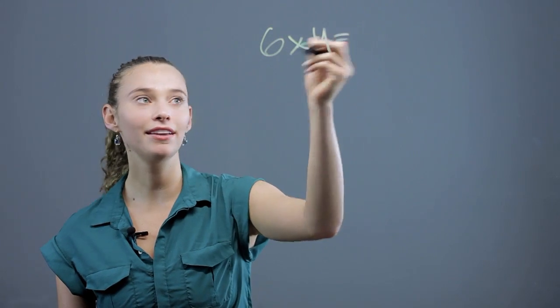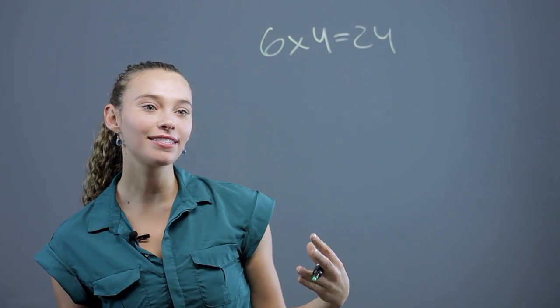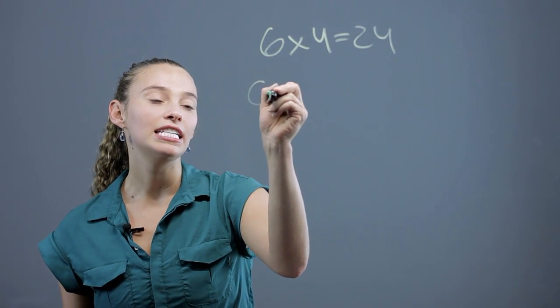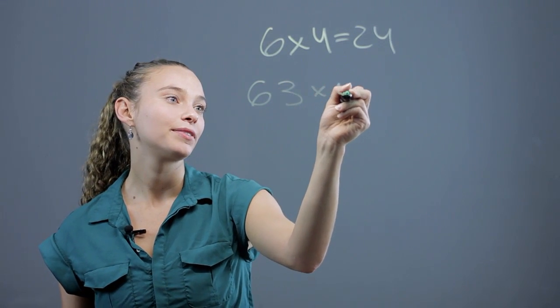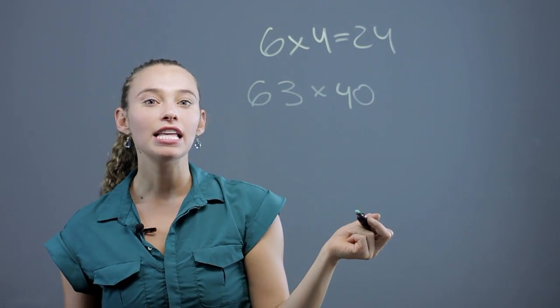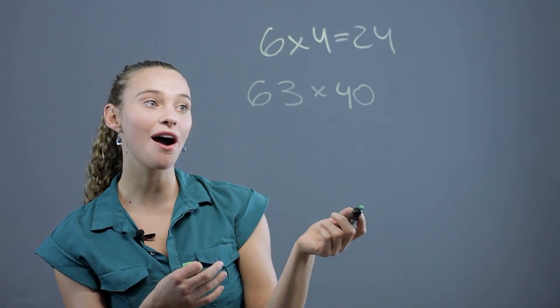6 times 4, right? 24. That's all mental math. But say you get something like 63 times 40, right? Then you might actually have to regroup if you want to do this without a calculator.